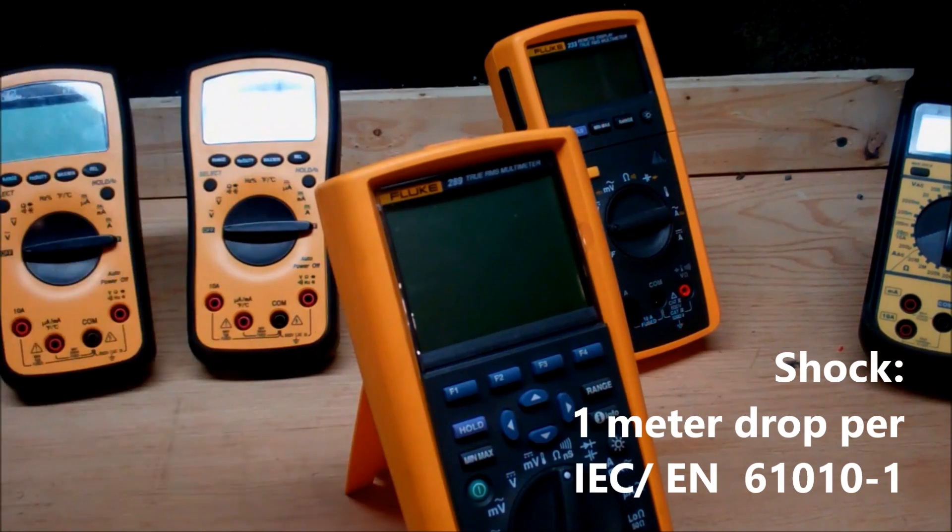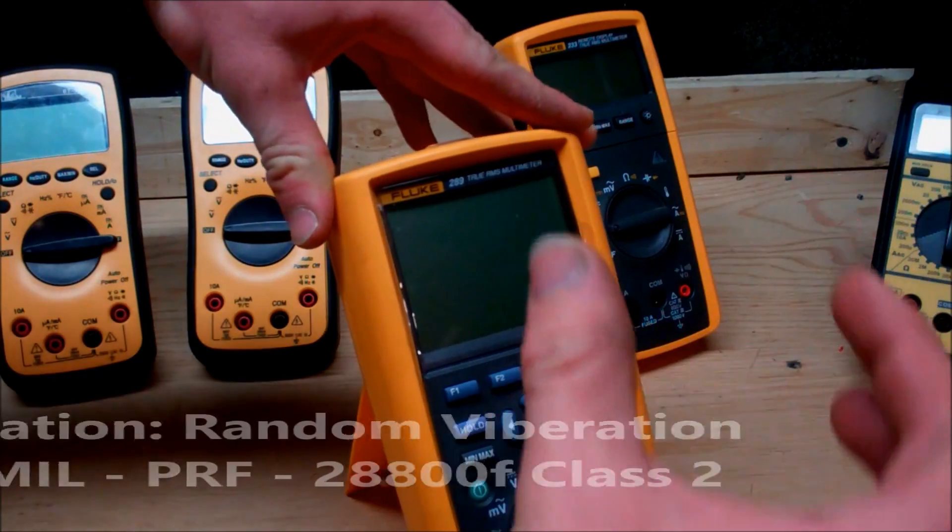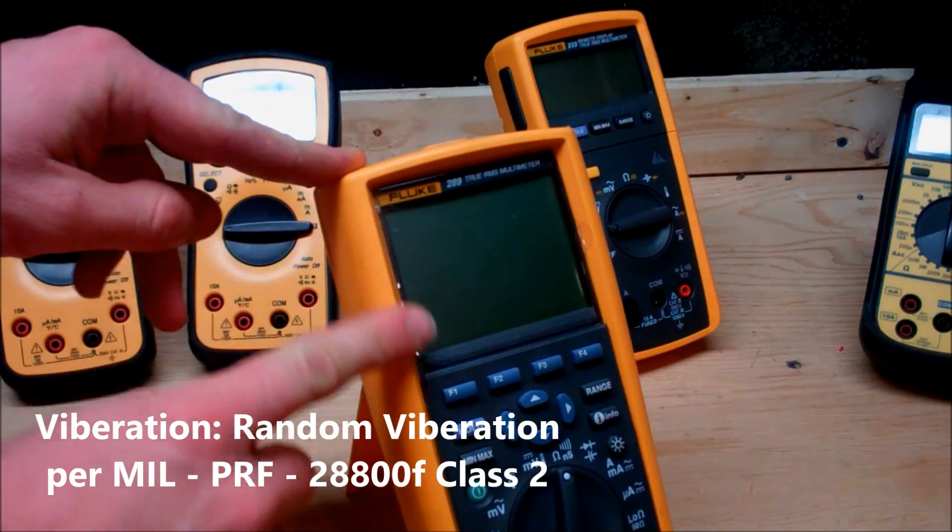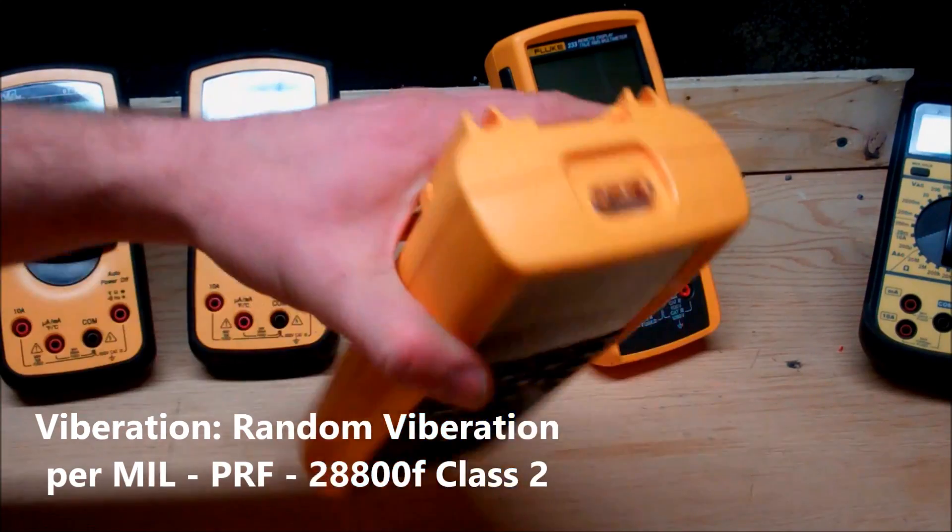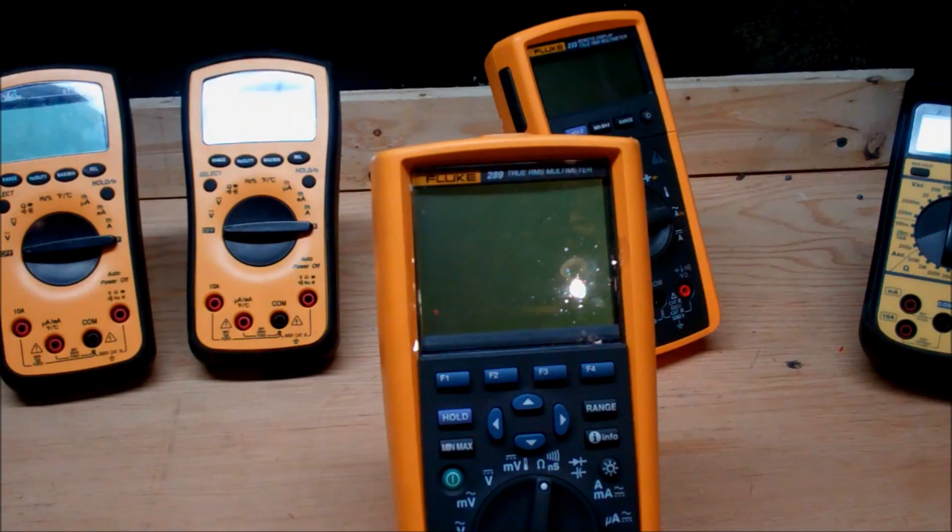One really clever idea by Fluke is the recession of the meter screen. They extrude the rubber molding out, which means there's a physical barrier between anything this thing drops on and the screen, so you're not going to damage it. It's a simple idea but it really translates well.